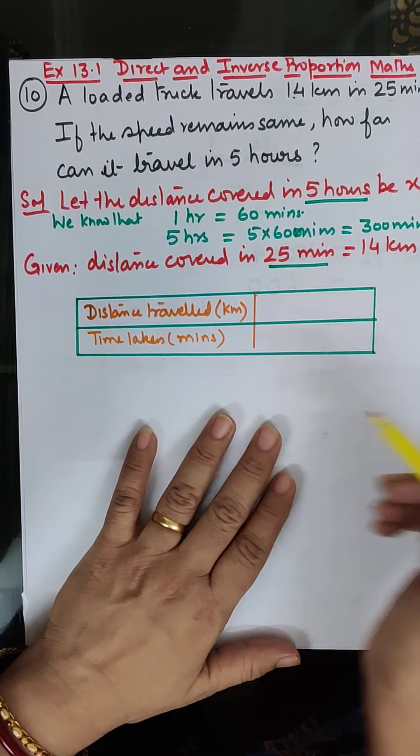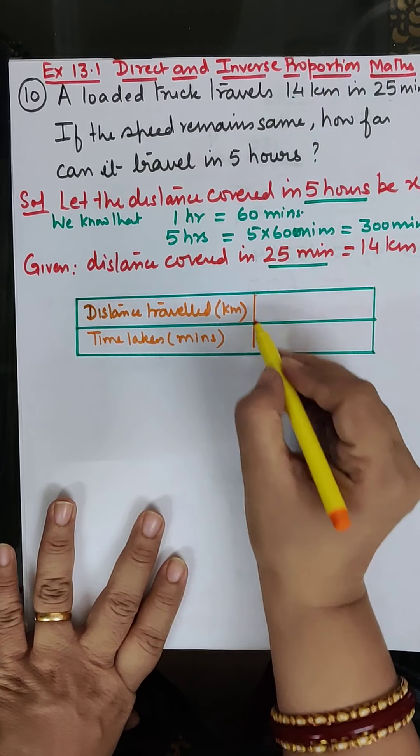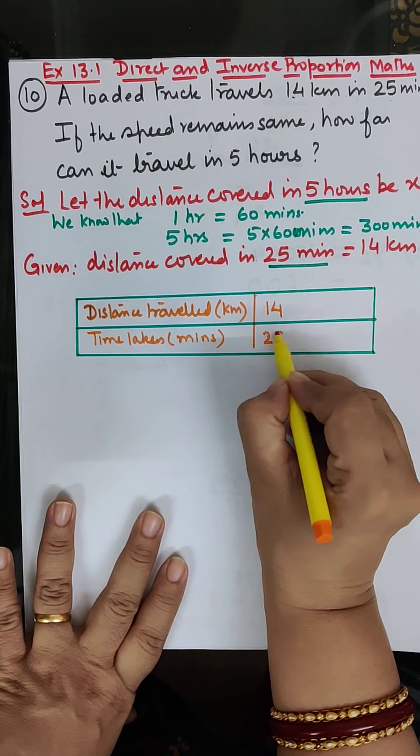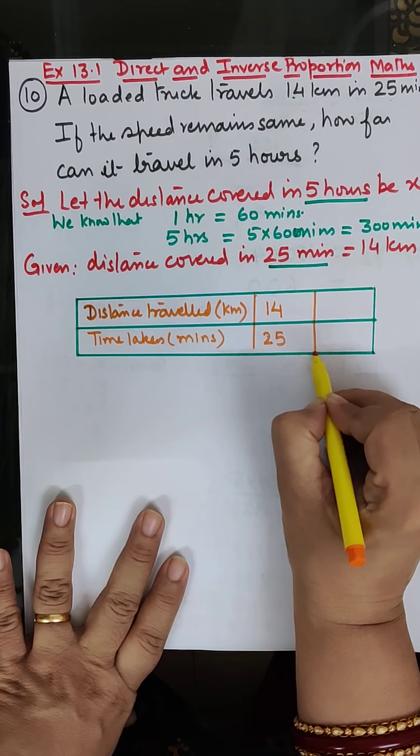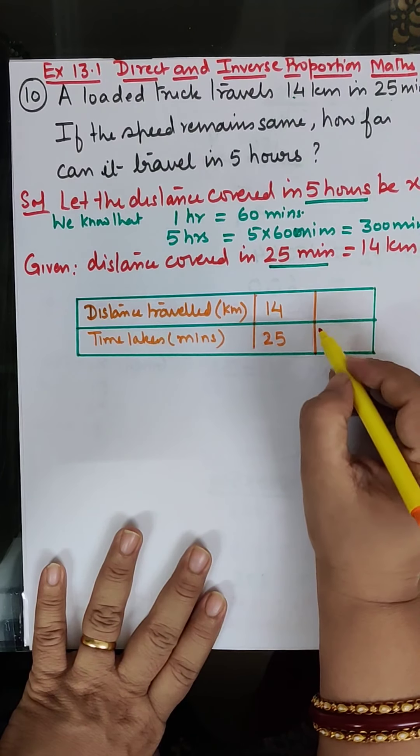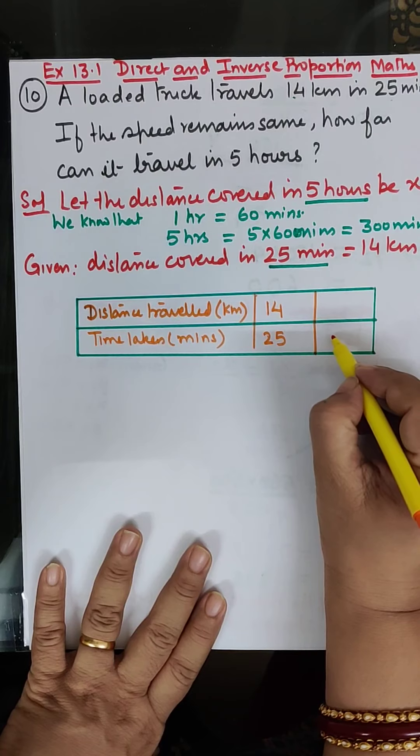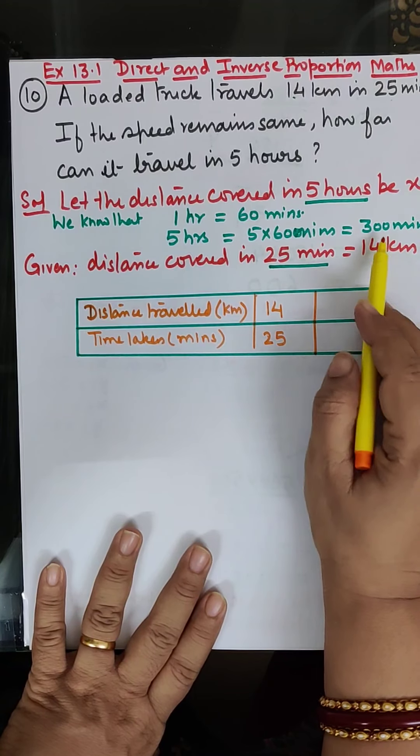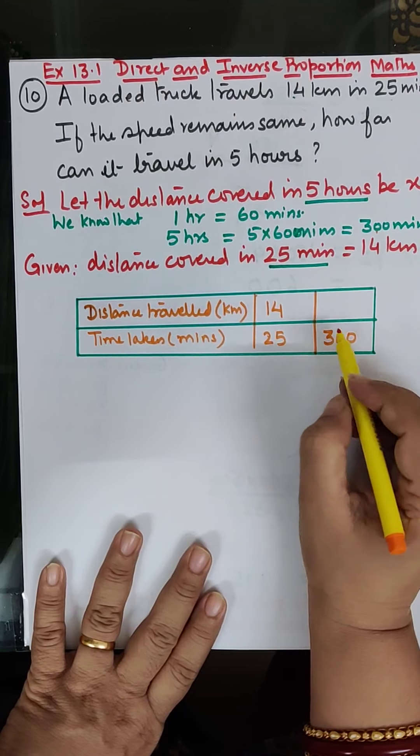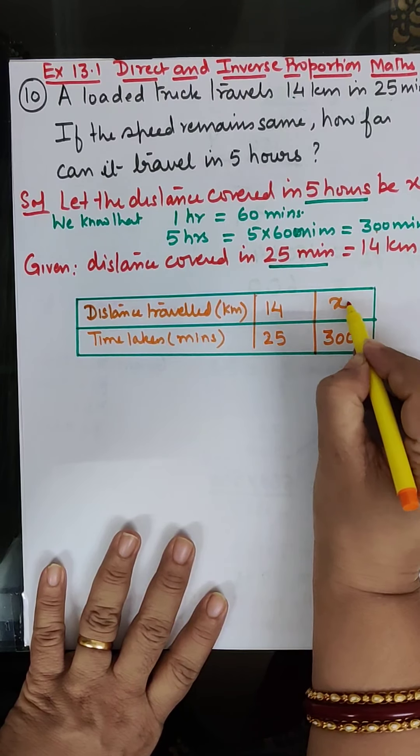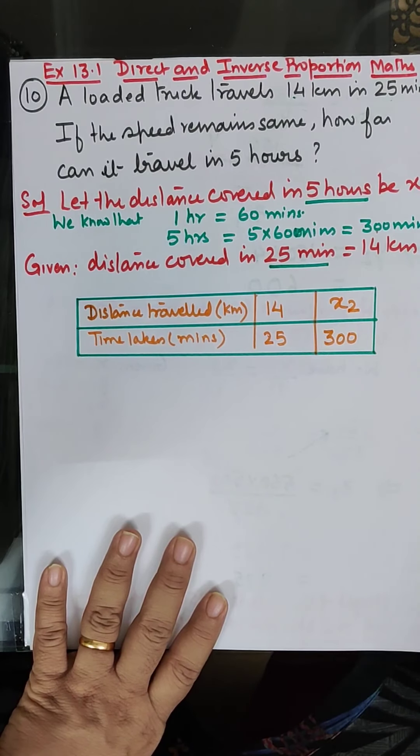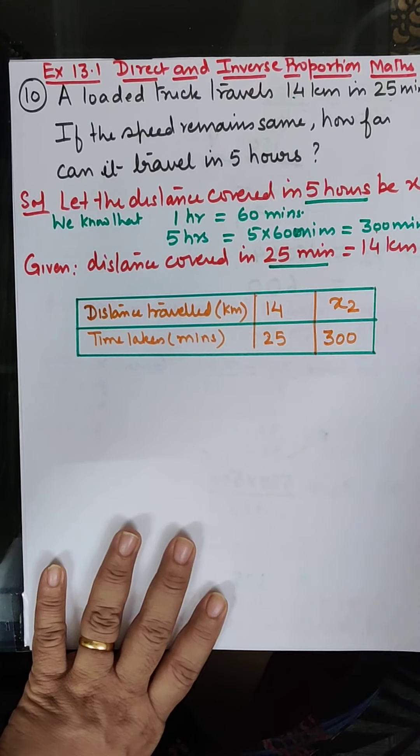Now let's see. Distance traveled is 14 kilometers and time taken is 25 minutes. Now next, time taken is 5 hours, 300 minutes. We have converted, 300 minutes. And distance traveled we have to find, so we assume x2.